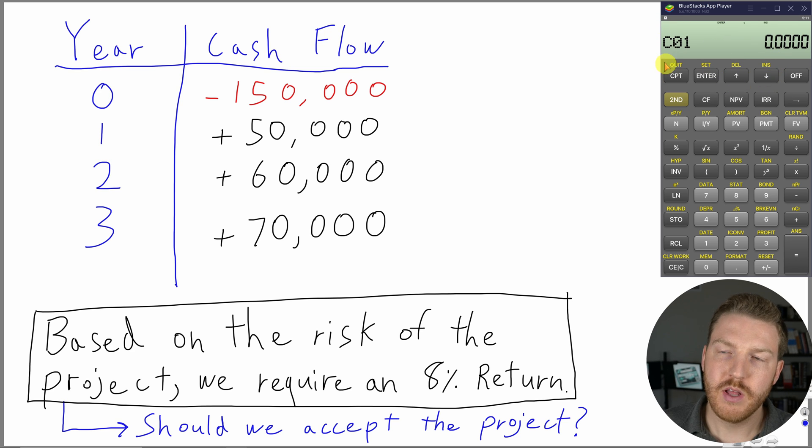Let's hit down arrow. Now this is cash flow at year one, so we can type in that $50,000, and then hit enter. That's locked in. Let's hit down arrow.